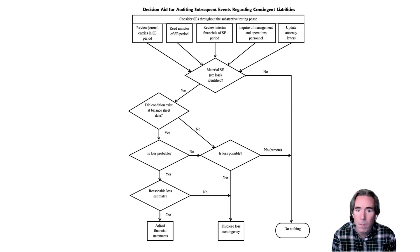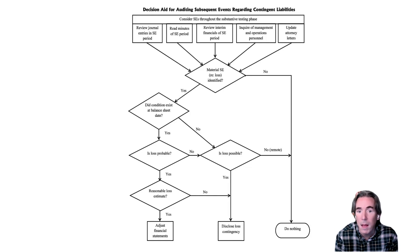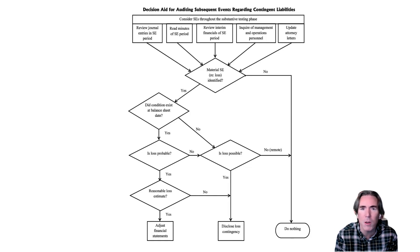Now, if the condition did not exist at the balance sheet date, or the loss is not probable, then the question will ask: is the loss possible? If the loss is not possible — in other words, a trivial lawsuit or a frivolous claim — then we're not going to require management to do anything. If the loss is possible but not probable, and the conditions did not exist at year end, then it needs to be disclosed.